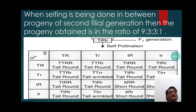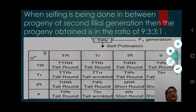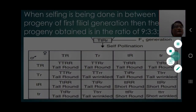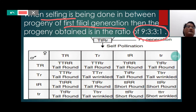When selfing is done among the progeny of the first filial generation, then the progeny obtained is in the ratio of 9:3:3:1. When the F1 generation plants are selfed, the phenotypic ratio obtained is 9 is to 3 is to 3 is to 1.